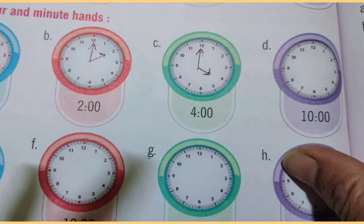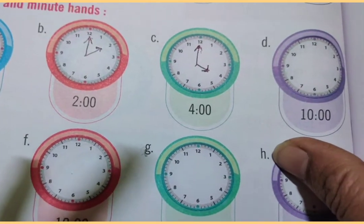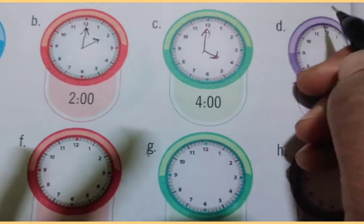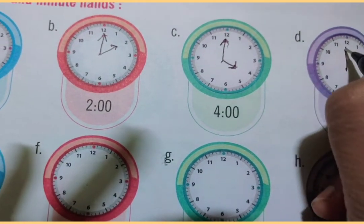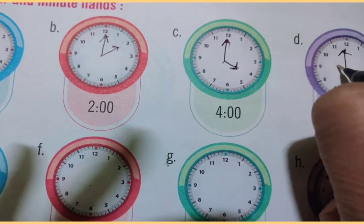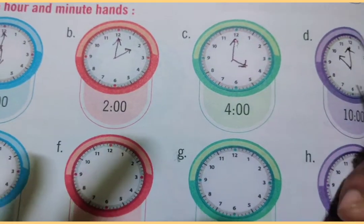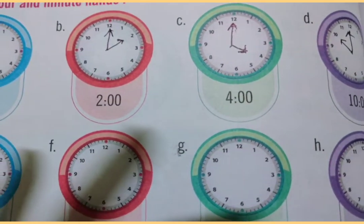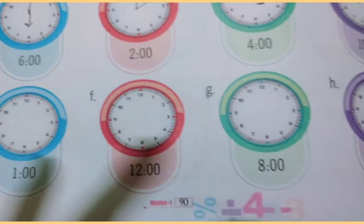Now next part D: ten o'clock. Draw the minute hand at 12 and the hour hand at 10. So the time given is ten o'clock.